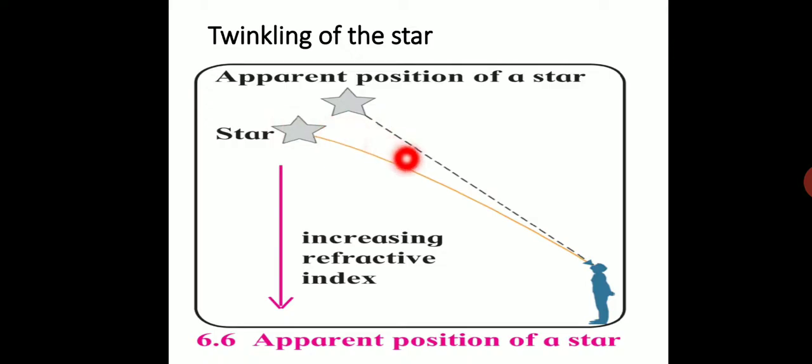Therefore, the refractive index of the atmosphere goes on increasing as density of air increases. Hence, the light of stars coming toward the Earth travels from rarer medium to denser medium and constantly bends toward the normal. This makes the light of stars appear at a higher position in the sky compared to its actual position. This is called the apparent position of stars.